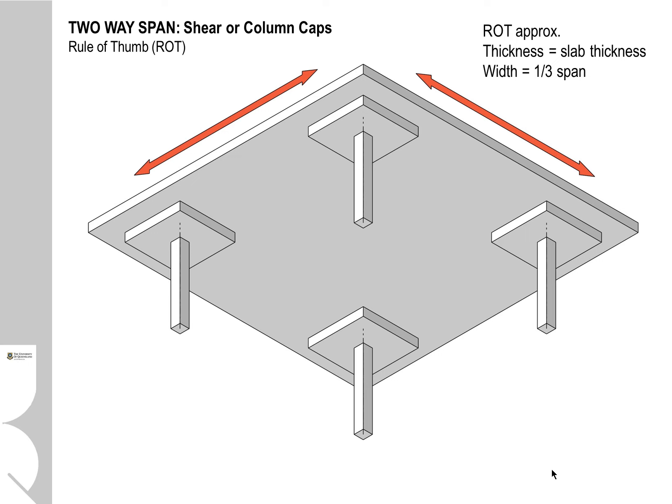With two-way structures, because there is a lot of shear stress or pressure at the tops of the columns, in order to optimise the thickness of the slab, often what you'll see are shear or column caps constructed on top of columns. The thickness of these column caps is approximately the same as the thickness of the slab, and the area of the column cap is about a third of the typical span of that slab. This gives more space within the reinforced concrete to distribute loads from the slab down into the column, providing more space for the steel and more capacity to arrange that complicated junction.